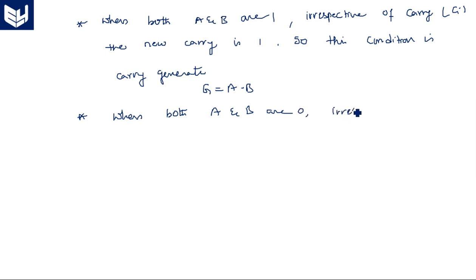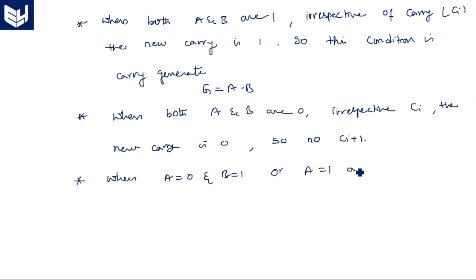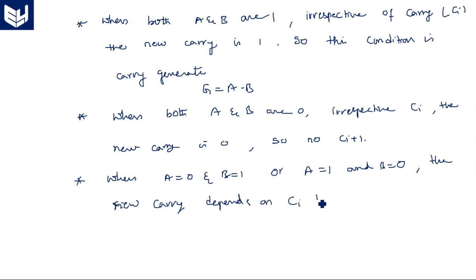When both A and B are 0, the new carry is zero — that's why there is no carry generate and no carry propagate. When A = 0 and B = 1, or A = 1 and B = 0, the new carry depends on the Cin bit.